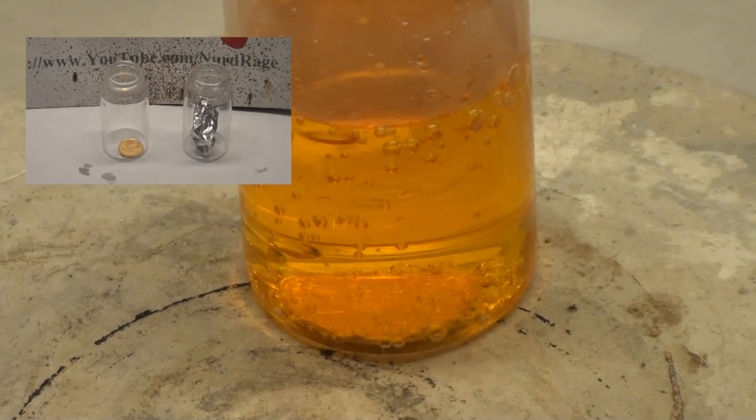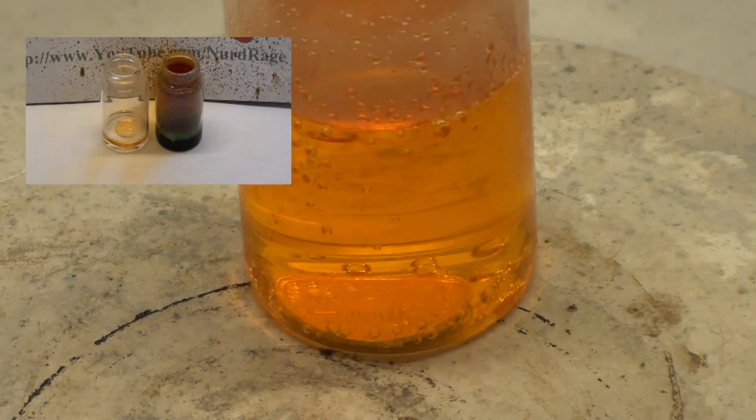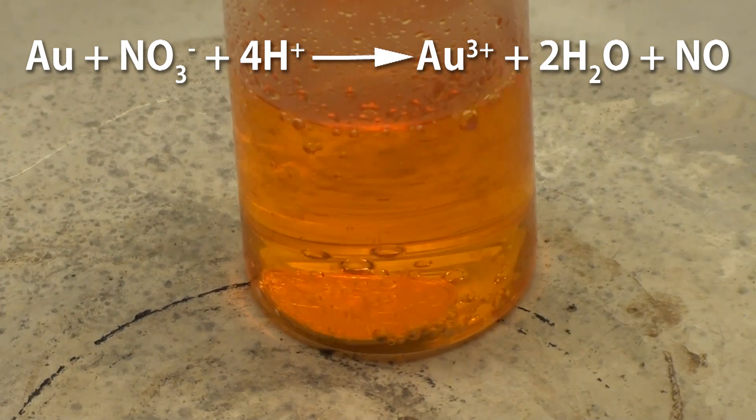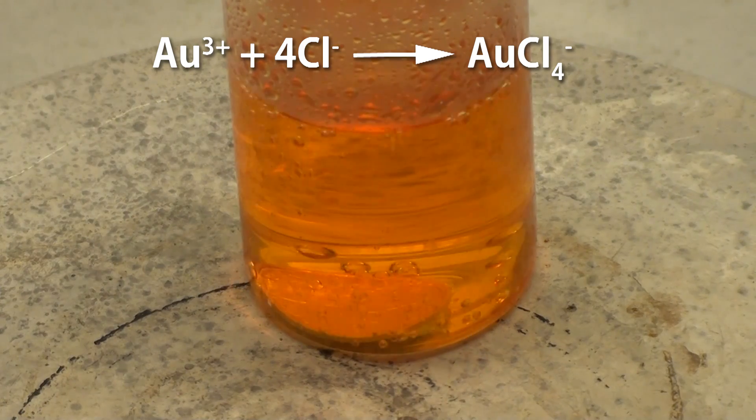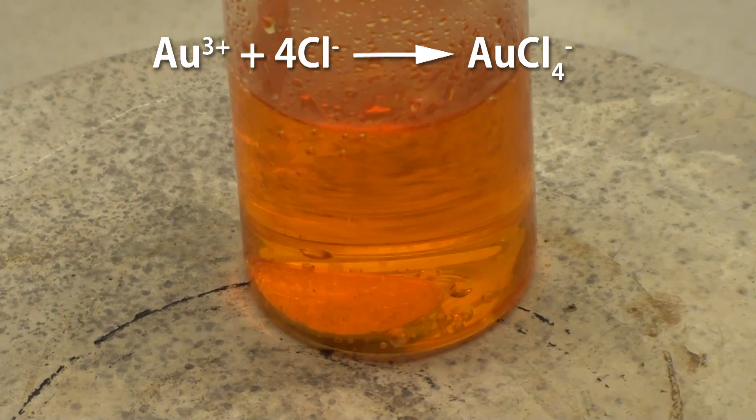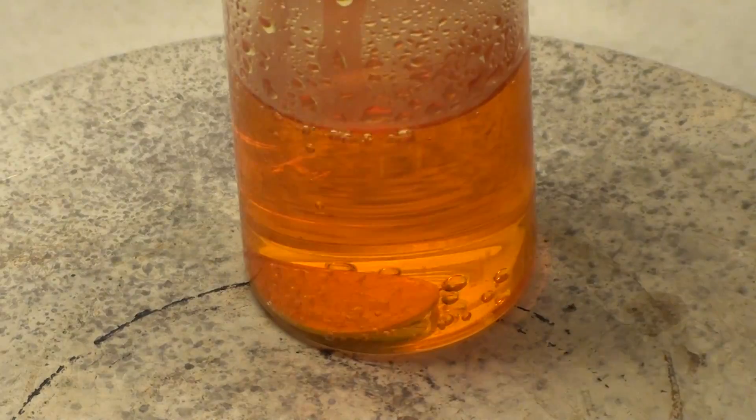We showed in a previous video that gold will not dissolve in either hydrochloric acid or nitric acid alone. What's happening here is that the nitric acid is first oxidizing the surface of the gold. Then the chloride ions in the hydrochloric acid react with the gold ions to form a complex ion that dissolves away into solution. The nitric acid then further oxidizes the surface and the process repeats.